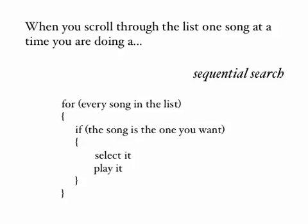Now what you're doing in these circumstances is what's called a sequential search, and we've got an algorithm for that written here. For every song in the list, if the song is the one that you want, then you select it and play it. So in the sequential search, we move through one song at a time, usually from the beginning of the list until we find the one we're looking for.